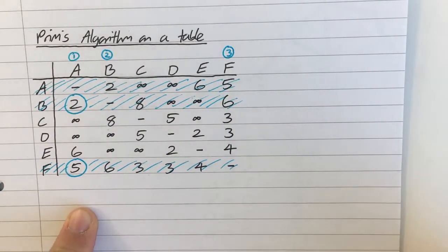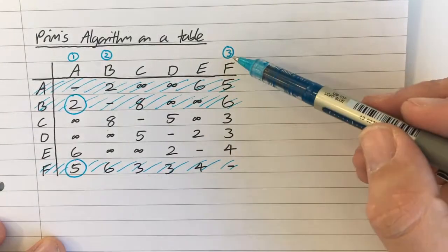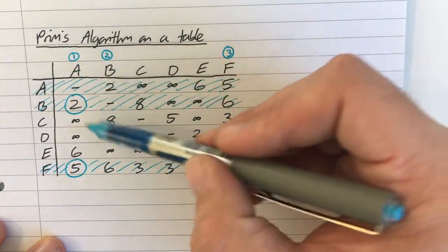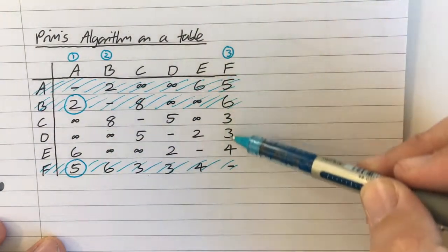Okay, are you happy with what I'm doing here? The process just keeps repeating until everything's crossed off. I look down all three of mine, so I've got a choice of 6, 8, 3, 3, or 4.